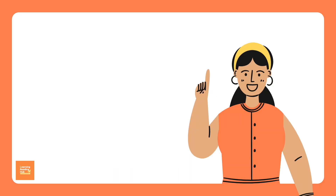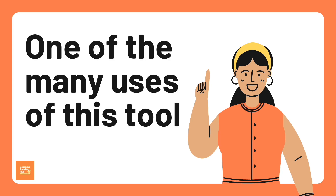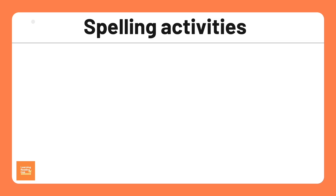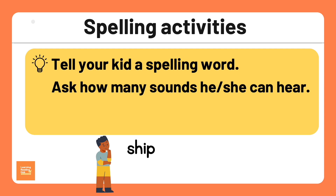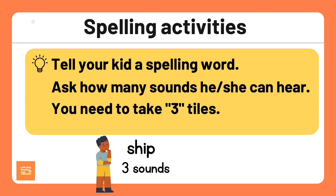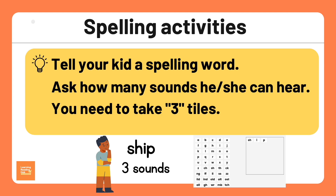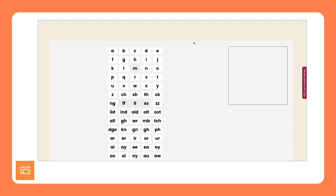By the way, playing unscramble word games is only one of the multiple uses of this tool. You can definitely use it to focus on spelling as well. For instance, tell your child a spelling word, then ask how many sounds he or she can hear. Say the word ship again — hopefully they will say three sounds. Then you say, okay, that means you need to take three tiles. See if your child can get the right tiles for those sounds and put them in the right order, spelling each sound heard in the word one at a time.